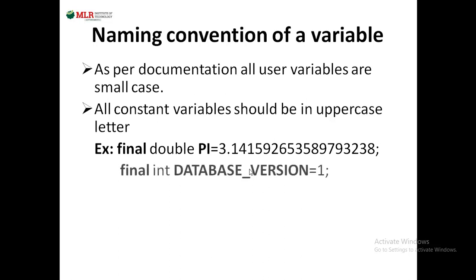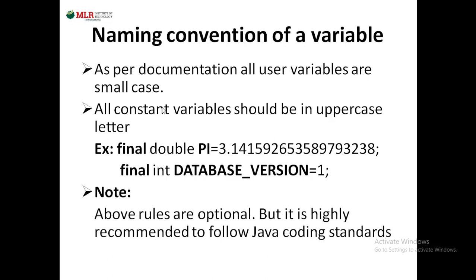For one more example: int DATABASE_VERSION — if database version remains the same during execution of your program and you don't want to change it anymore, you need to declare it as final. Note that these two naming rules are optional, but it is highly recommended to follow Java coding standards.